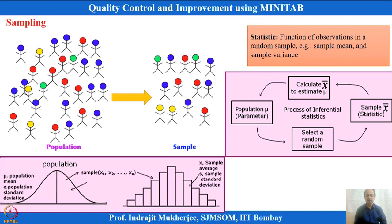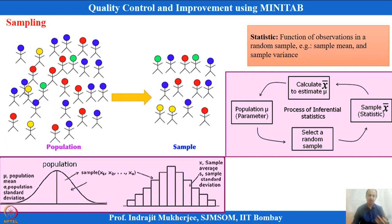In quality control, what we do is take samples — for example, machine outputs. Assuming infinite populations, we take some samples that give us a snapshot about the process, and based on that we try to determine short-term and long-term process capability.